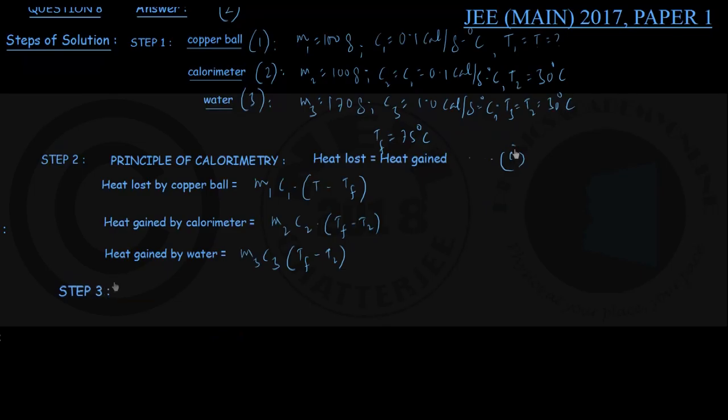In my next step, keeping an eye on equation number 1, heat lost by copper ball M1 C1 into T minus Tf equals heat gained by calorimeter M2 C2 into Tf minus T2 plus M3 C3 into Tf minus T2. You can write this as M1 C1 into T minus Tf equals inside brackets M2 C2 plus M3 C3 into Tf minus T2.